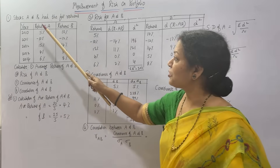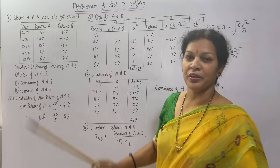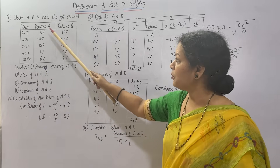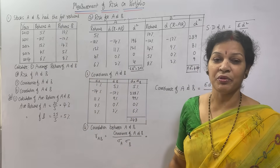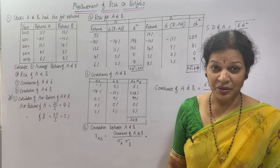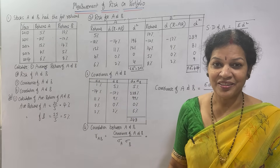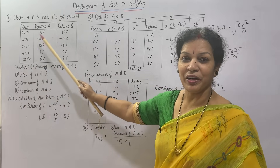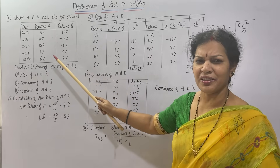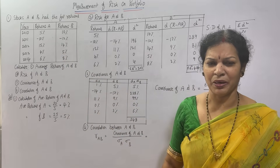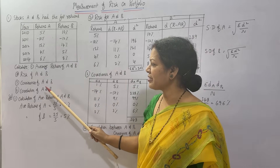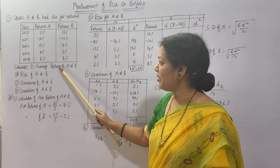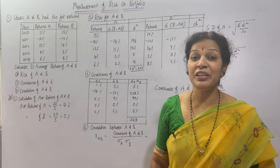The problem is given to us. Stock A and B had the following returns. Two stocks are there — Stock A and Stock B. Their returns are given to us over five years. There are some negative values also — doesn't matter. What we have to calculate is four things. One is average returns of A and B.